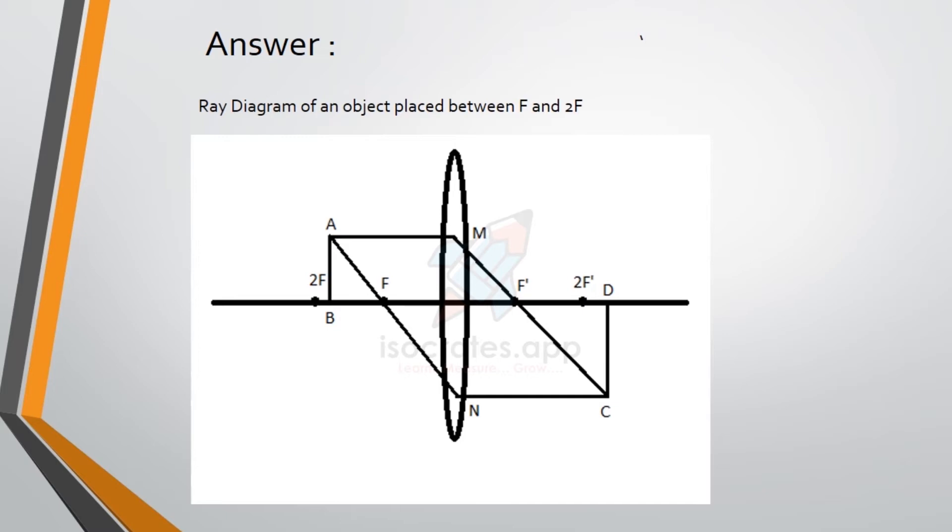Then we have to extend a line that is parallel to the axis until it reaches the lens from point A. The endpoint of that line will be M. From M, we have to connect to F' and extend the line.